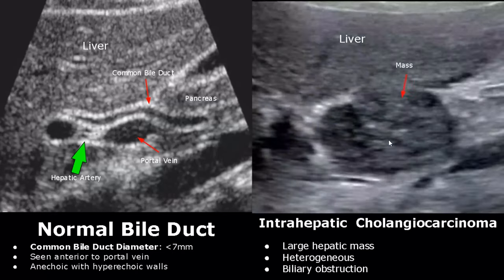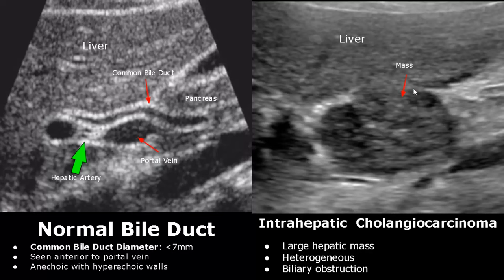Intrahepatic cholangiocarcinoma is the second type — it can also be classified under liver cancers. There is a large heterogeneous mass involving both the bile duct and the liver.